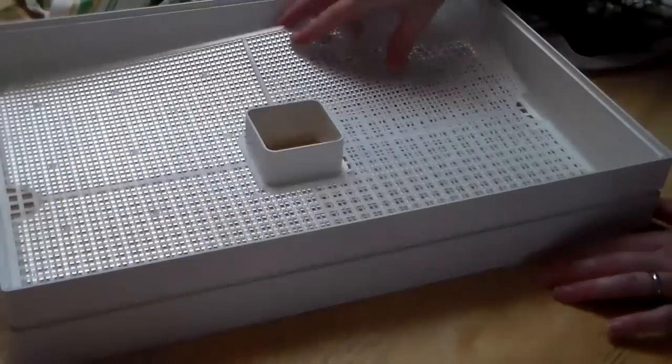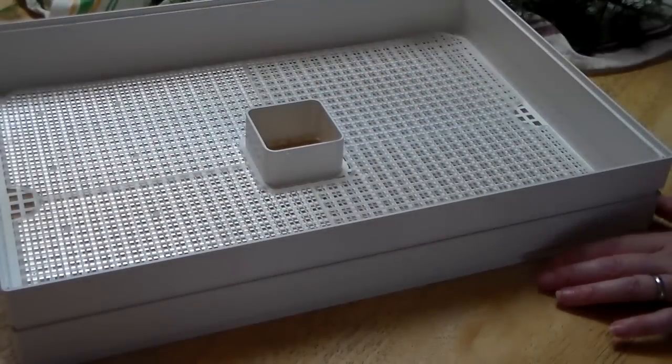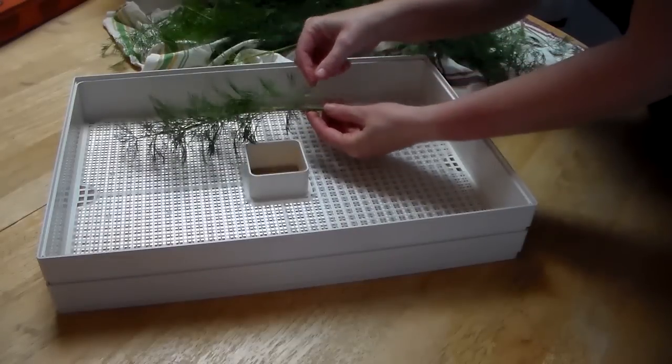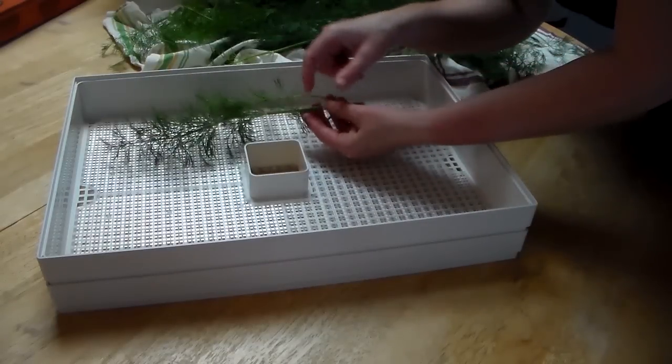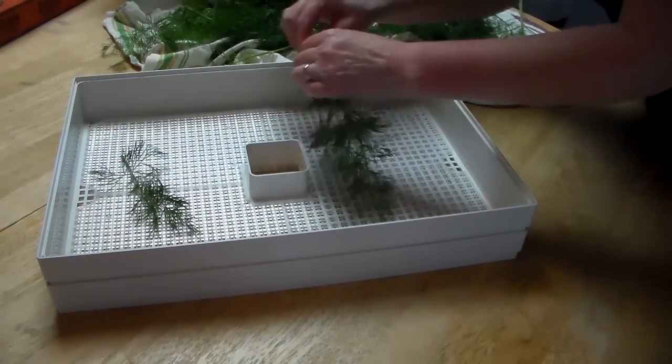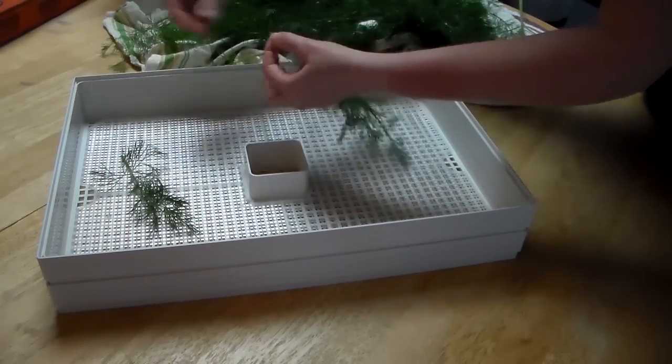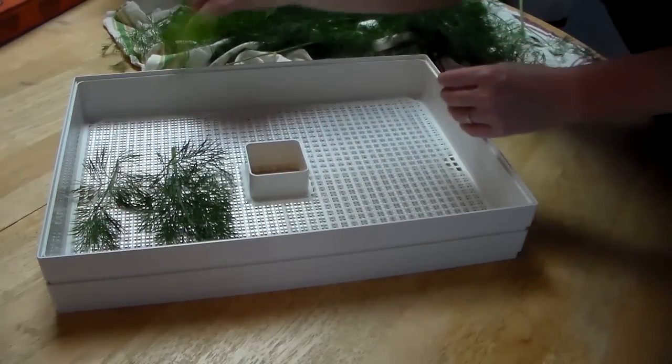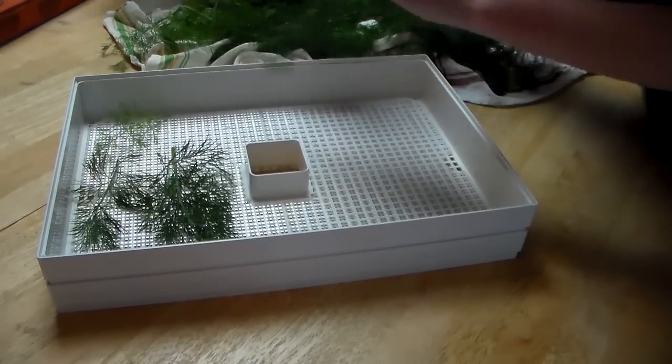If yours has a liner you want to go ahead and slip the liners into it. As you put it into the tray you can go ahead and remove it from the bigger stock and it's fairly easy to pinch off. You do want to make sure that you just have one layer so that it dries evenly.